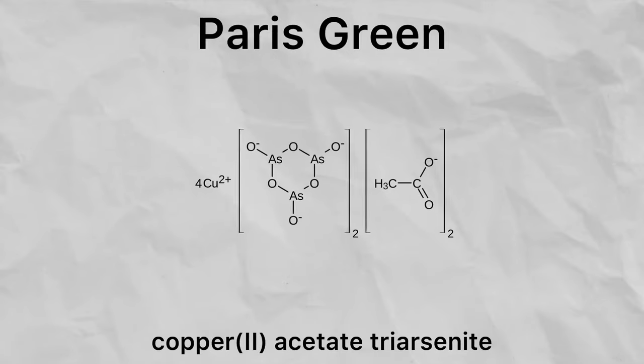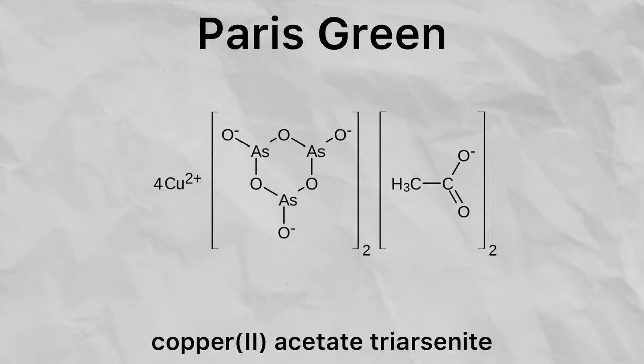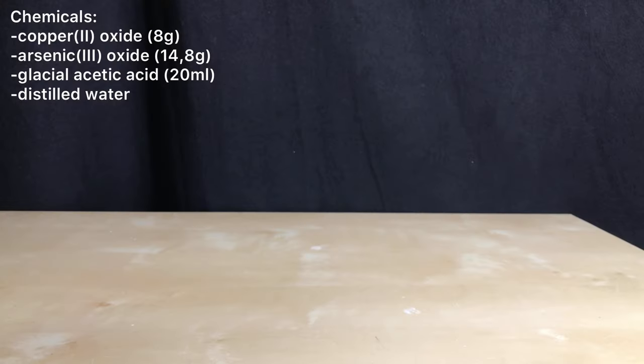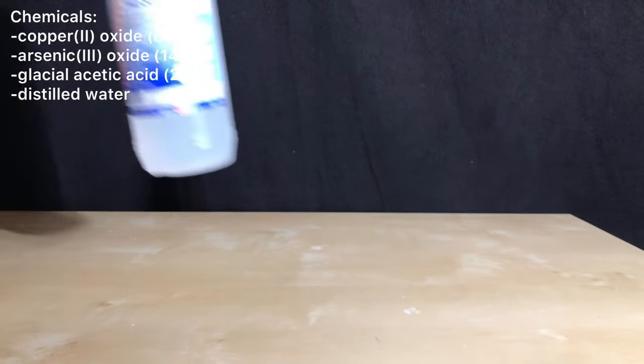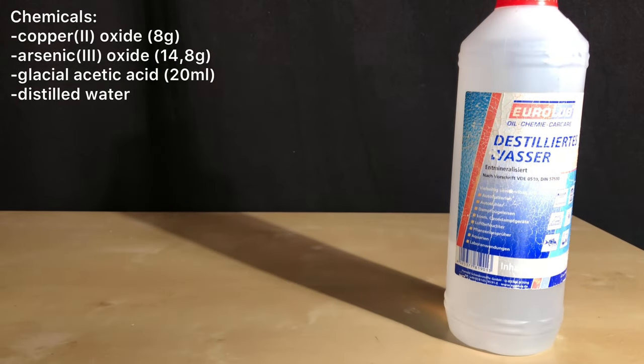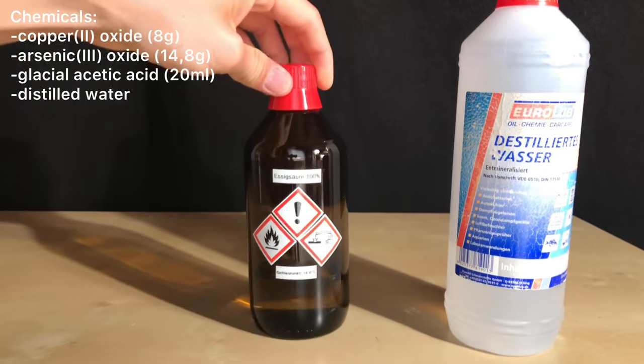Welcome back everyone. Today we are going to make a very toxic pigment called Paris Green, or also Copper 2 Acetate Triarsenite. This pigment has been used for painting walls and for making green dresses and it led to numerous poisoning accidents. Without much more talking, let's begin.